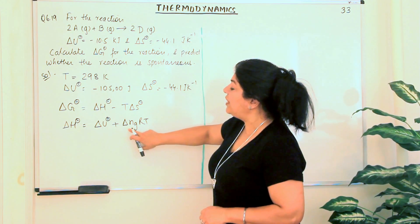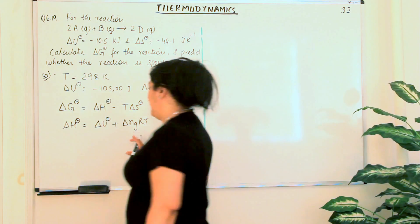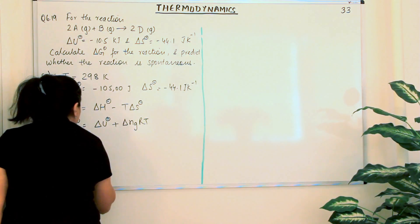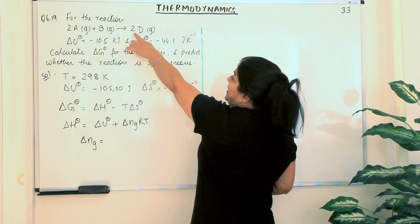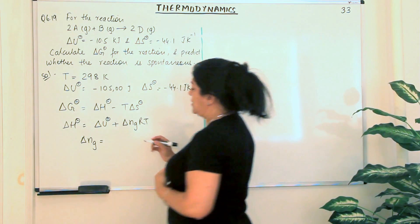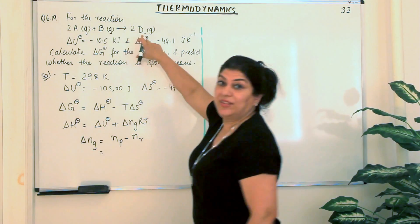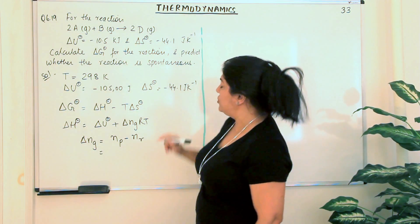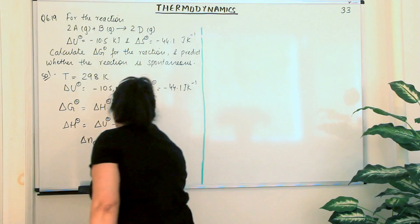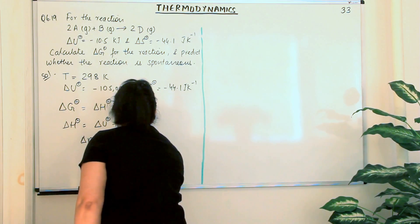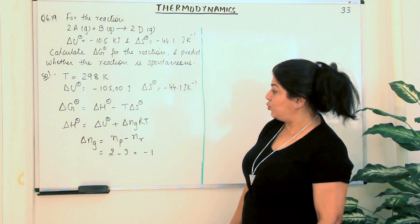What is the change in number of moles of gaseous reactants and products? Delta Ng equals moles of gaseous products minus moles of gaseous reactants. We have 2 moles of gaseous products. And the reactants are 2 plus 1, which is 3 moles. So 2 minus 3 makes delta Ng equal to minus 1.